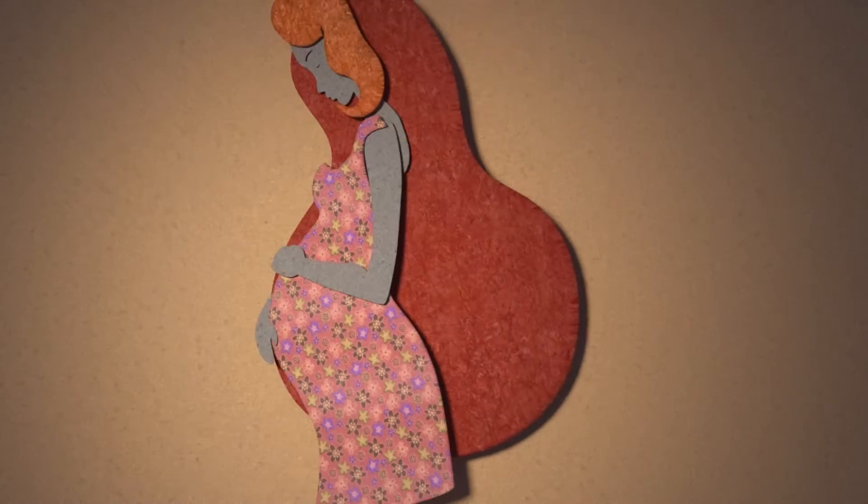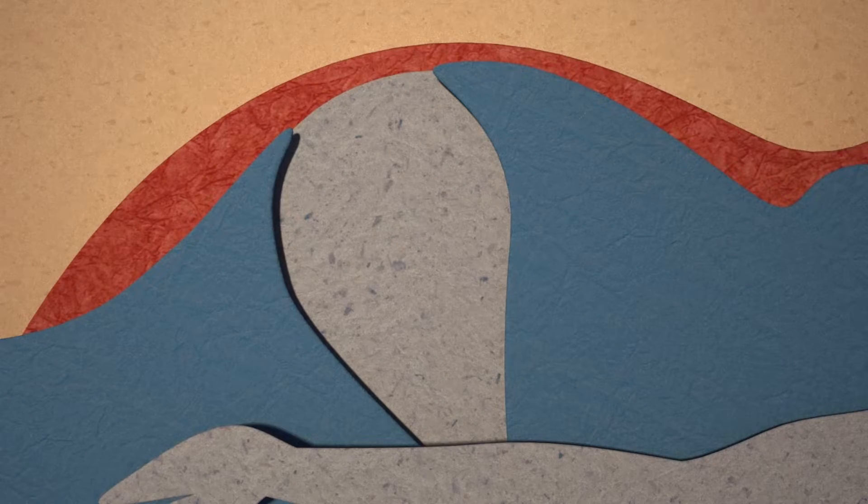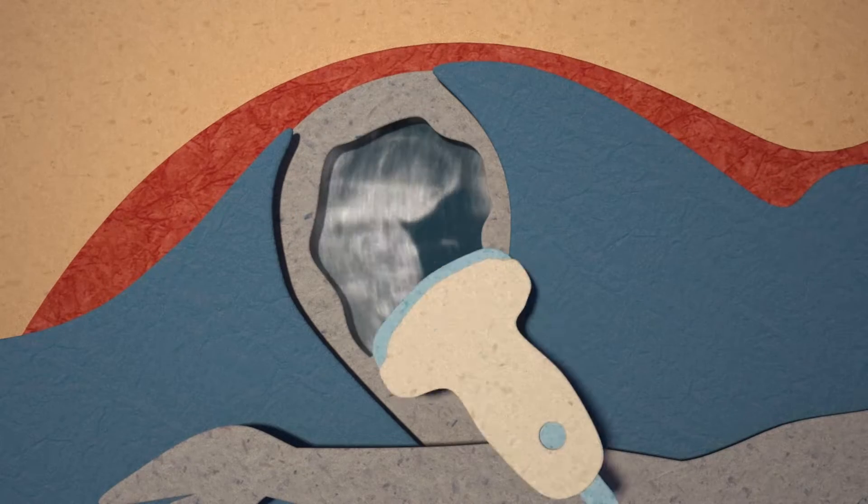We make an incision on the mom's abdomen and bring the uterus up to the surface. We pick a spot away from the placenta, open up the uterus as small as possible, and then rotate the baby so that the back of the baby is up against that incision.